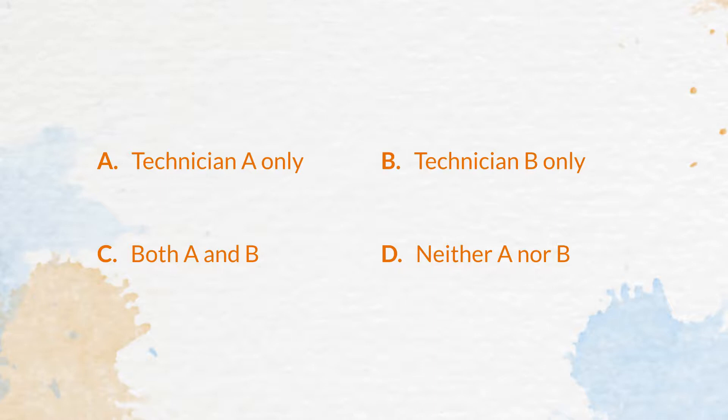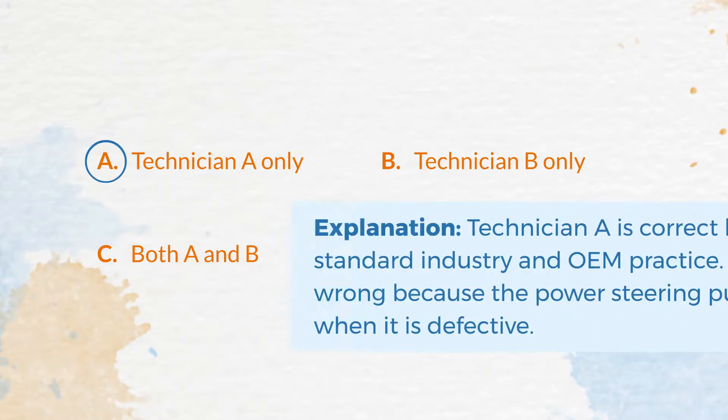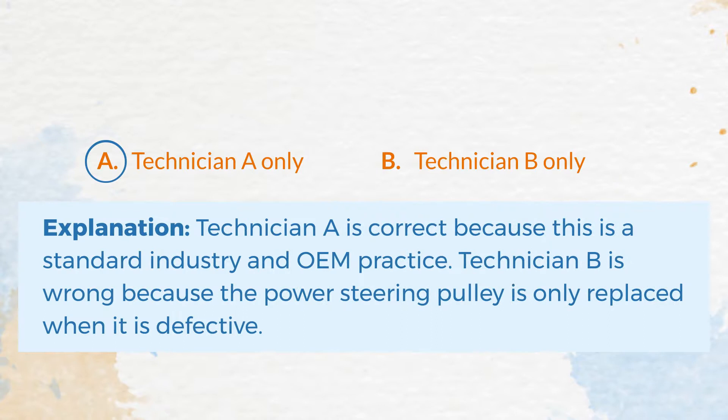The correct answer is A. Technician A only. Explanation: Technician A is correct because this is a standard industry and OEM practice. Technician B is wrong because the power steering pulley is only replaced when it is defective.